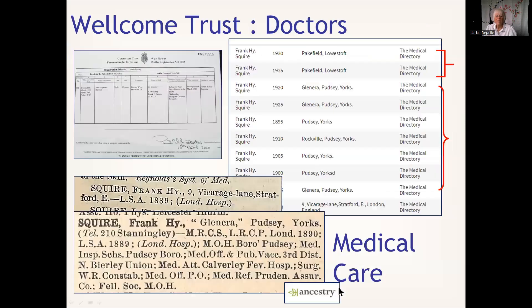Thinking about a death certificate and the doctor - what standard of medical care is available to our residents? You can see from this one at the bottom - these records are from the Wellcome Trust on Ancestry - it tells me that this man came from London trained. He's the Medical Officer of Health, an Inspector of Schools for the borough, does public vaccinations, is involved with the poor law union, a fever hospital, the police in the county, the post office, and also an insurance company and an independent society - all sorts of avenues to research as background to where this person lives.